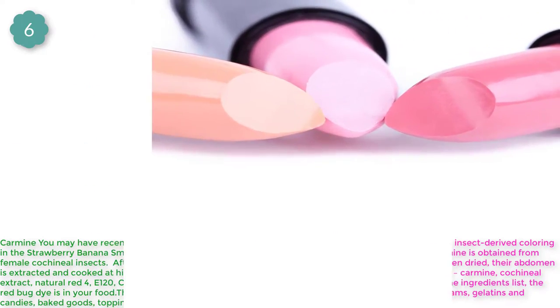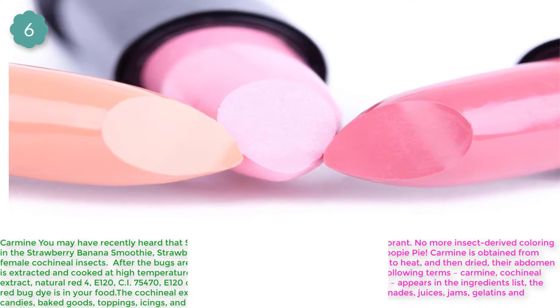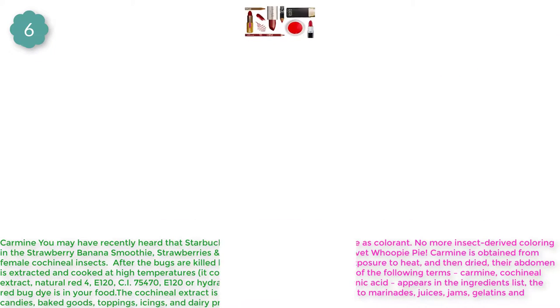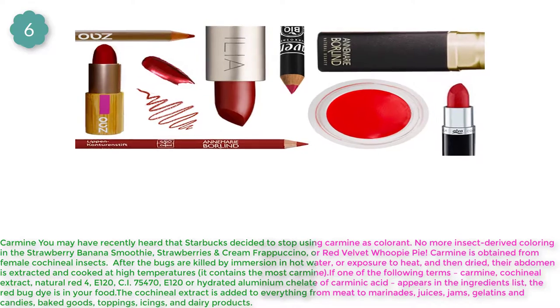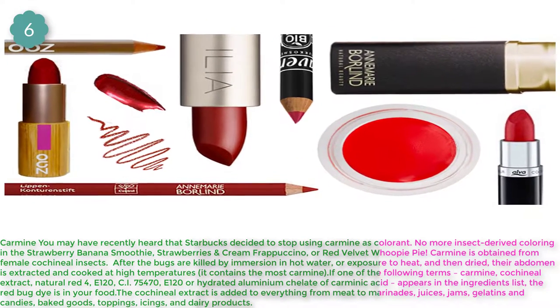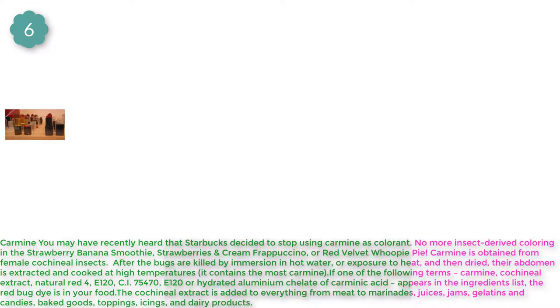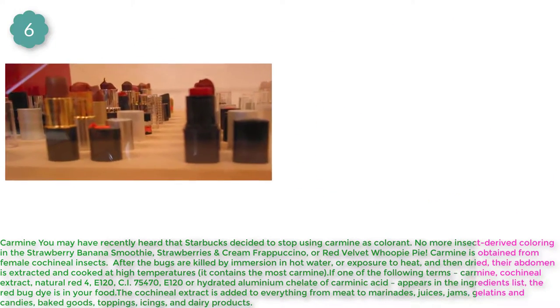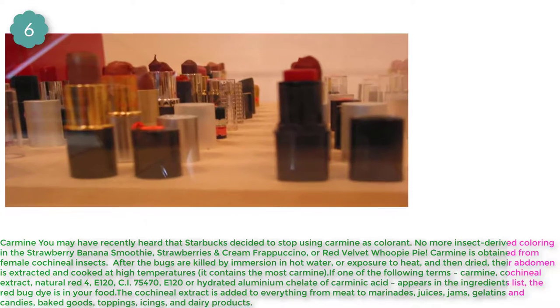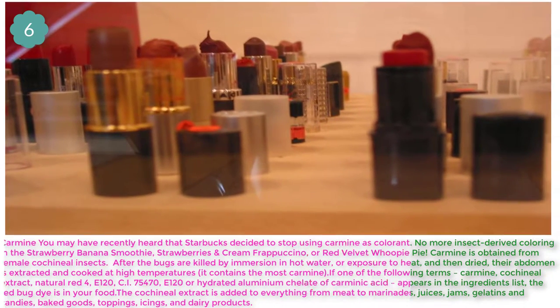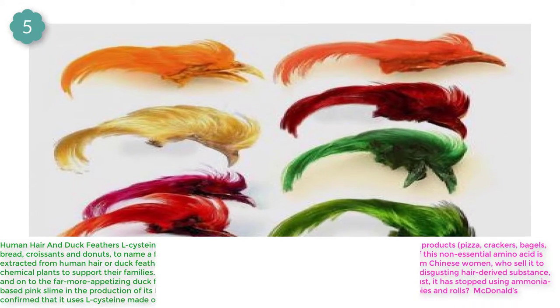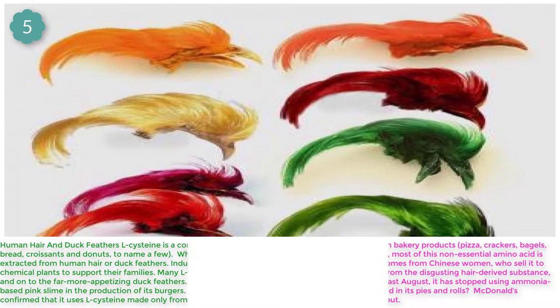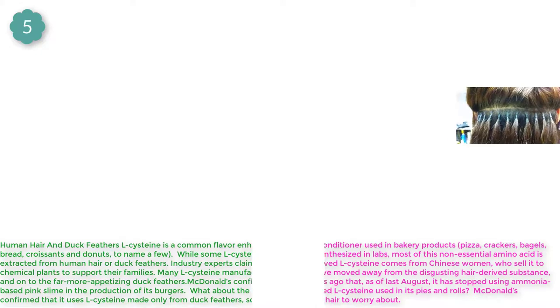It takes approximately 300,000 lac bugs to produce shellac. Number 6: Carmine. You may have recently heard that Starbucks decided to stop using carmine as a colorant — no more insect-derived coloring in the strawberry banana smoothie, strawberries and cream Frappuccino, or red velvet products. Carmine is obtained from female cochineal insects.